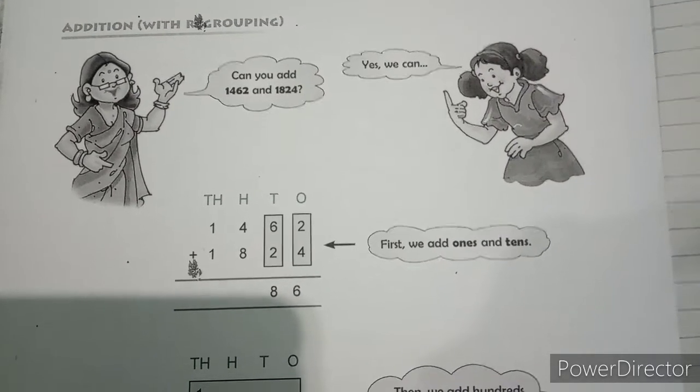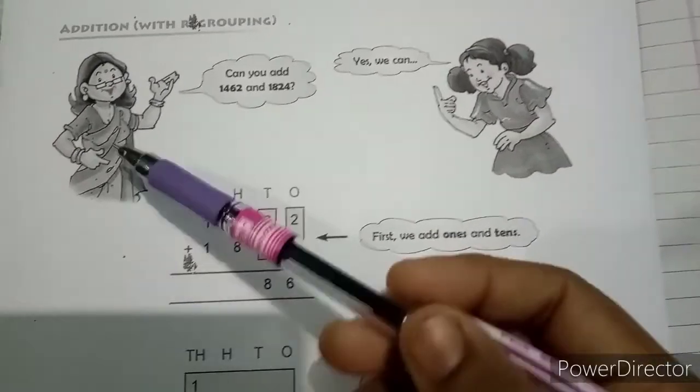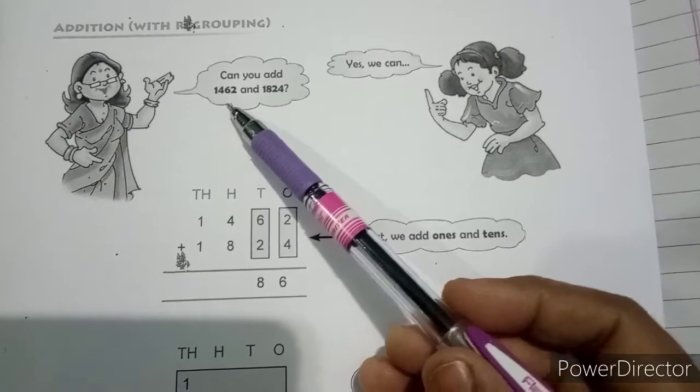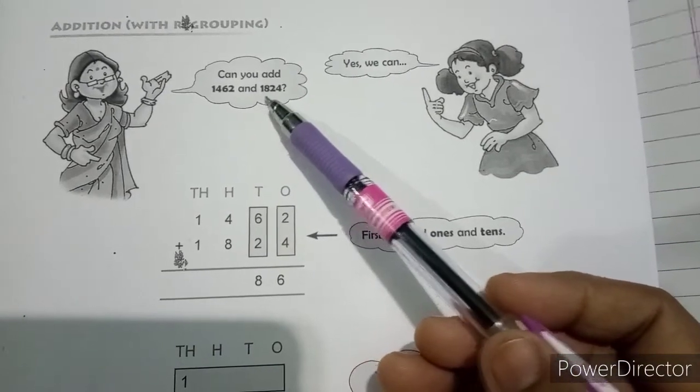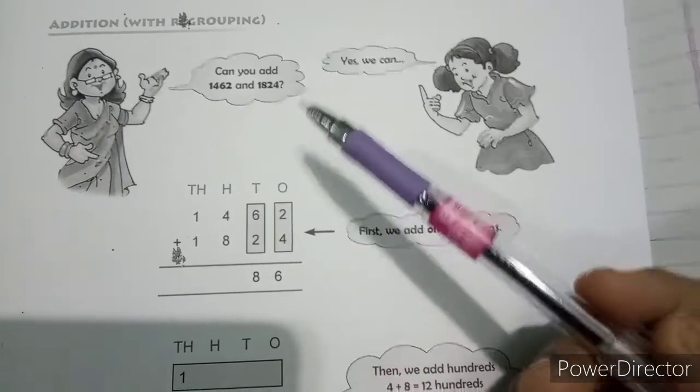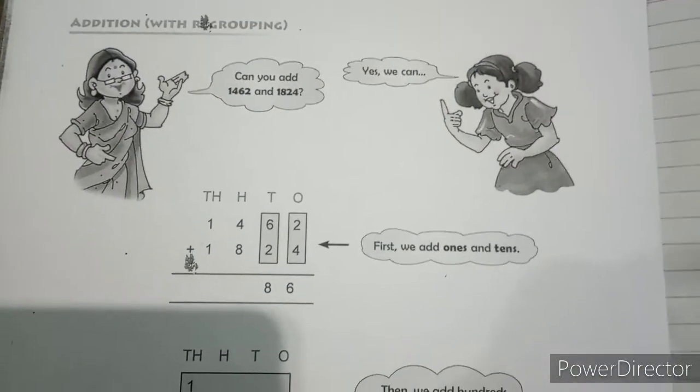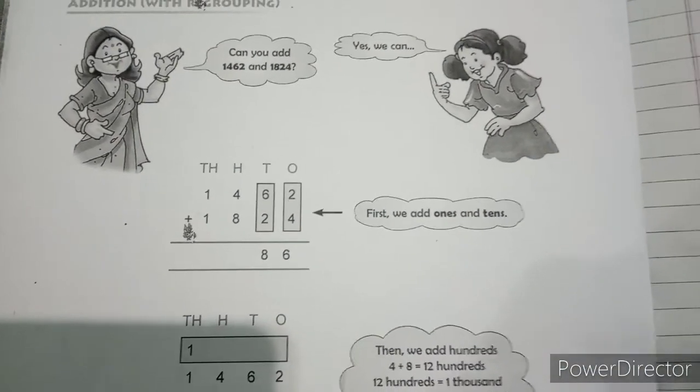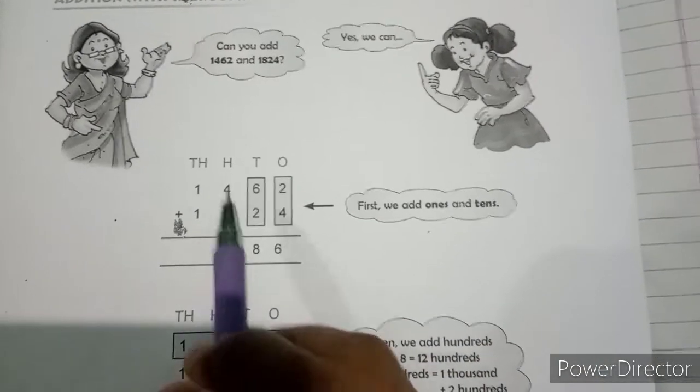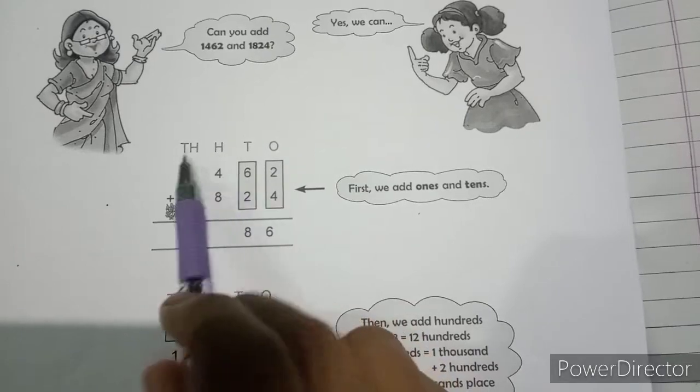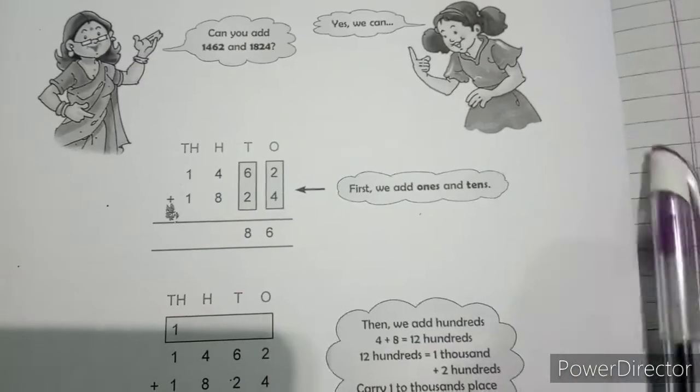Addition with regrouping. A teacher asks can you add 1462 and 1824? The student says yes we can add it. And the student starts writing the number like this, and writes the place value as well - ones, tens, hundreds and thousands.